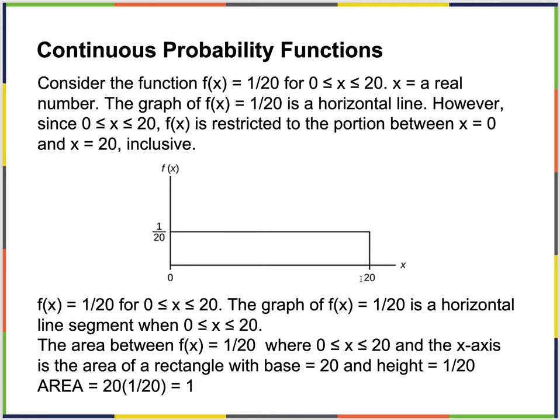Consider the function 1/20 for x between 0 and 20 — the domain is from 0 to 20. If I take 20 as the length and multiply by the height, the area is going to be 1, which qualifies this as a probability density function. At each point, the density function value is 1/20, but the probability of an individual item — like the probability of exactly 20 or exactly 1 — is always 0.